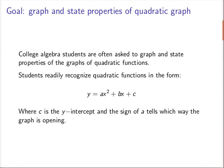Students readily recognize in that general form that the a value, the leading coefficient on x squared, tells whether this parabola—they also recognize that a quadratic function graphs as a parabola—that the parabola is going to be opening up if a is positive and opening down if a is negative.